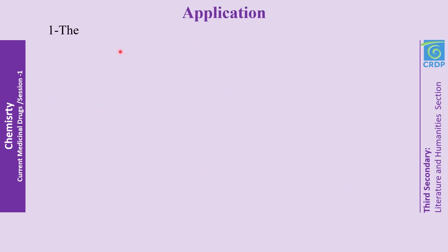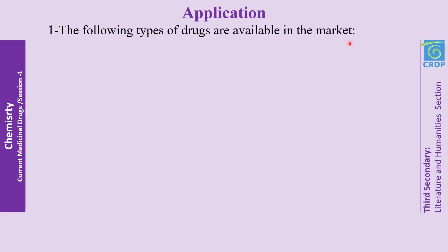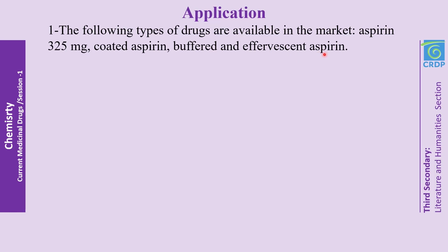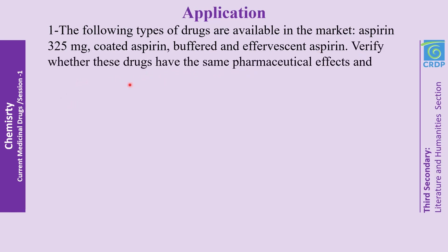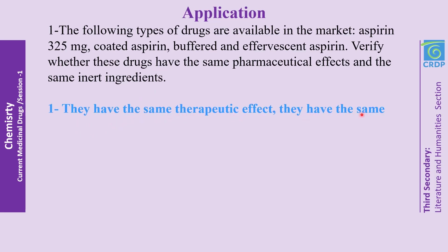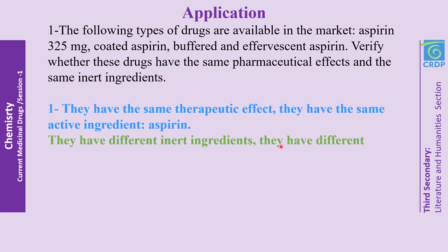Application: The following types of drugs are available in the market — aspirin 325 mg, coated aspirin, buffered aspirin, and effervescent aspirin. Verify whether these drugs have the same pharmaceutical effects and the same inert ingredients. The answer is: they have the same therapeutic effect and the same active ingredient, which is aspirin, but they have different inert ingredients and different formulations.